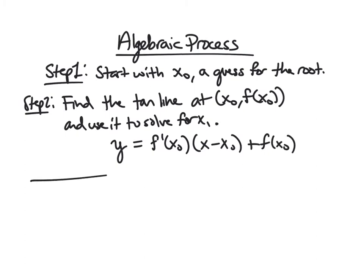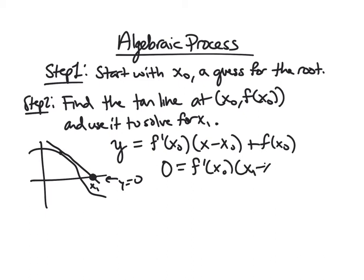So then geometrically, what did we do next? So we found our tangent line. And then we looked and we saw when it crossed the x-axis. So when it crosses the x-axis, y is equal to 0. And we said this point was x1. So I'm going to plug in x1 for x and 0 for y. So 0 is equal to f prime of x0 times x1 minus x0 plus f of x0.